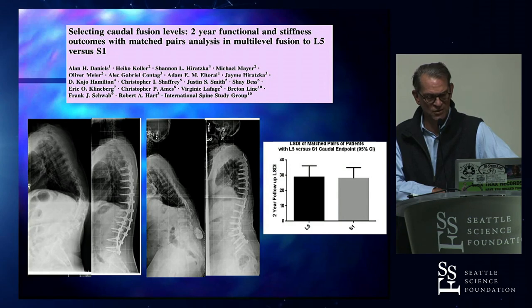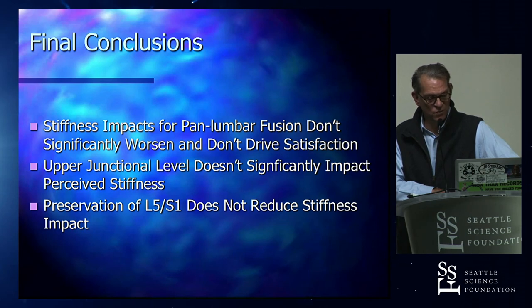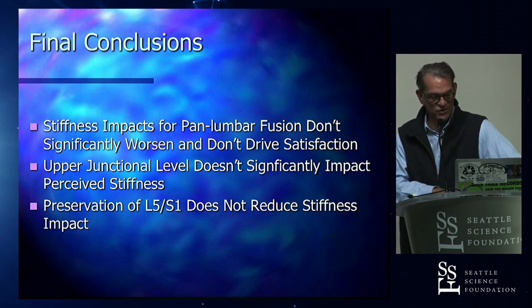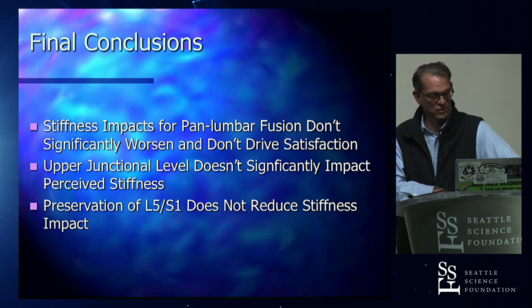My final conclusions: stiffness impacts from pan-lumbar fusion don't significantly worsen function and don't significantly drive dissatisfaction. It doesn't matter whether we stop at the thoracolumbar junction or go to the upper thoracic spine in terms of effect on perceived stiffness. And whether we retain L5-S1 as a motion segment also does not seem to reduce stiffness impacts to any substantial degree.